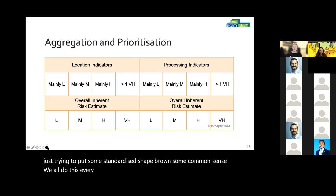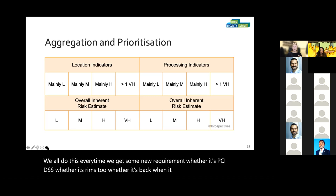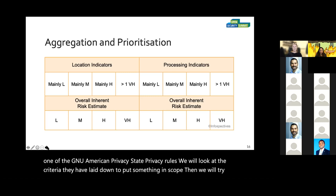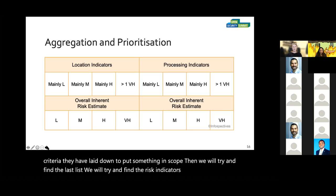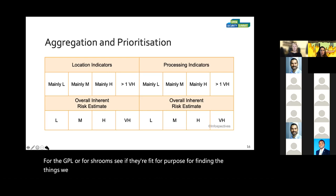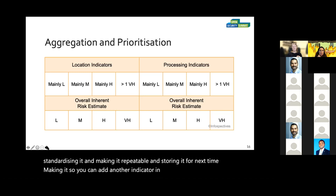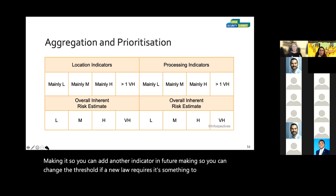This isn't rocket science. This is just trying to put some standardized shape around common sense. We all do this every time we get some requirement — whether it's PCI DSS, Schrems 2, GDPR, or one of the new American state privacy rules. We look at the criteria laid down to put something in scope, then try to find the risk indicators we used last time to see if they're fit for purpose. What this is about is standardizing it, making it repeatable and storing it for next time — making it so you can add another indicator in future, or change a threshold if a new law requires something to be considered more risky.